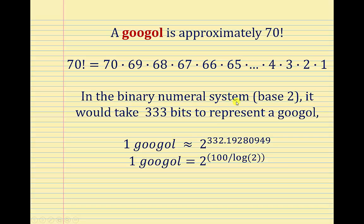In the binary numeral system, which is base 2, it would take 333 bits, or 333 digits, to represent a googol. So googol is approximately 2^332.2, and one googol is exactly 2^100 divided by log 2.